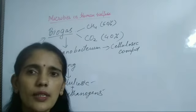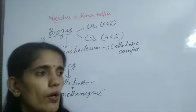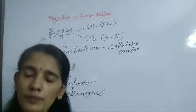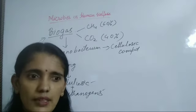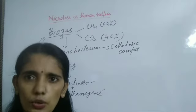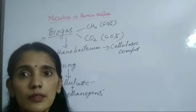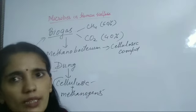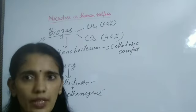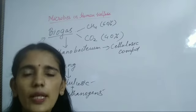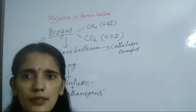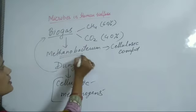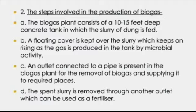Biogas helps in the production of electricity and is also used as fuel in kitchens. The biogas is prepared in a biogas plant, and the leftover material is used as manure in fields. So here, microbes are helping in the production of biogas.